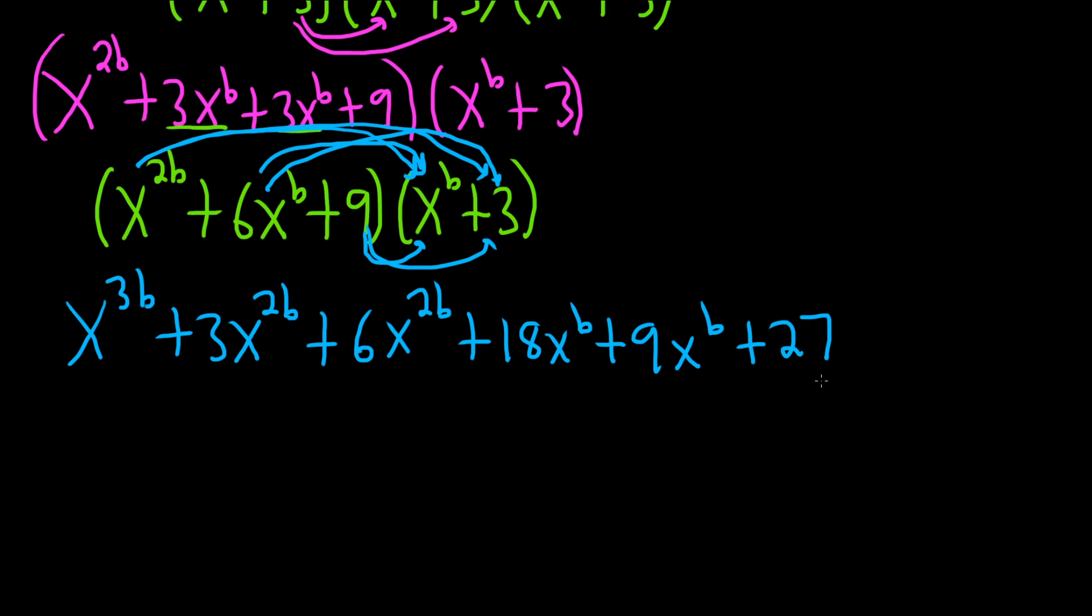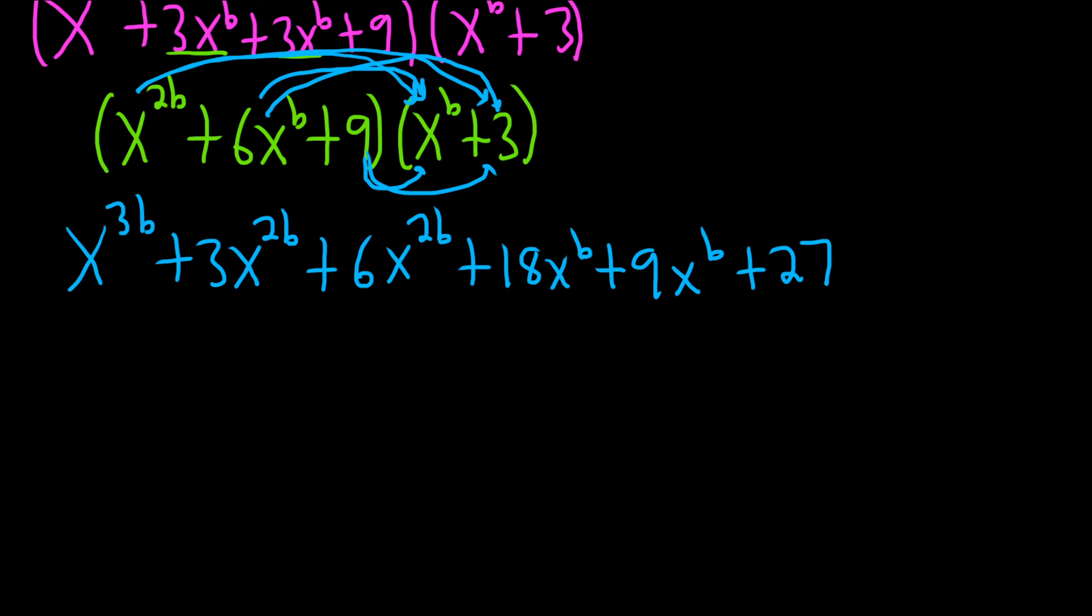Good stuff. Looks like we can finish this up now. So we have x to the 3b. And let's see here. 3x to the 2b plus 6x to the 2b is going to give us 9x to the 2b.